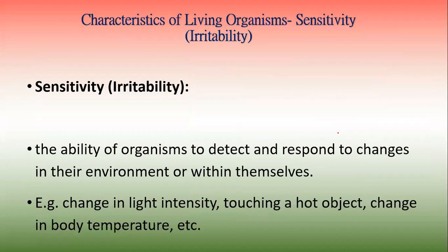Irritability is the ability an organism has to detect and respond to changes in its environment or within itself, because the changes don't always have to happen outside of the organism — they can happen inside as well. For example, changing light intensity on the outside, touching a hot object on the outside, or changing body temperature on the inside.